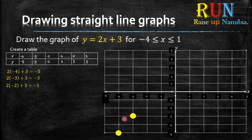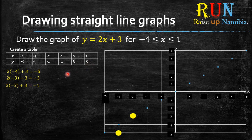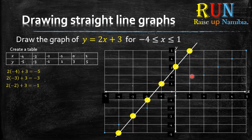Now I want you to pause the video and do a rough drawing on a piece of paper to see if you can plot the remaining points. Pause the video now. Those are where the remaining points are supposed to be plotted. After you are done plotting, you can see this is a straight line graph — so take out your ruler, draw a line, and you are done with the table method.